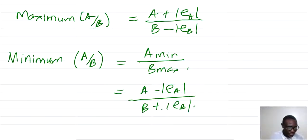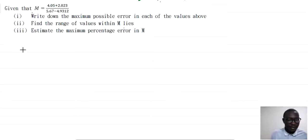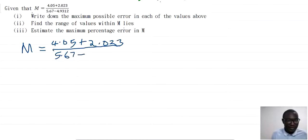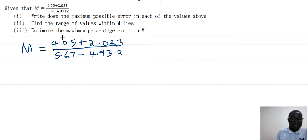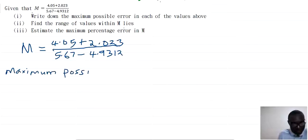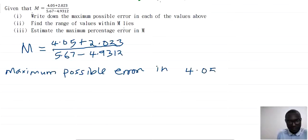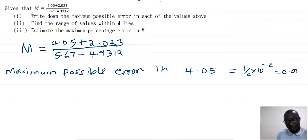With this introduction, let us look at an example. Given that M equals (4.05 plus 2.023) all over (5.67 minus 4.9312), the first part asks us to write down the maximum possible error in each of the values. The maximum possible error in 4.05 is equal to a half times 10 to the power negative 2, which gives us 0.005.